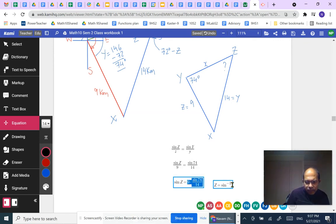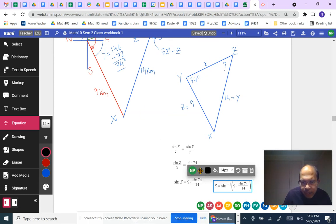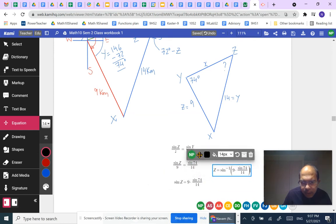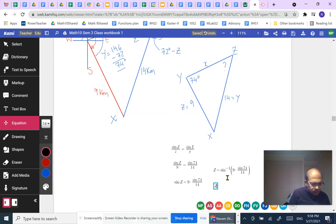Let's put this in a bracket to just make sure that we're including all of it. If you use the calculator to find this, then you'll find that the answer for Z is 38.167 degrees.